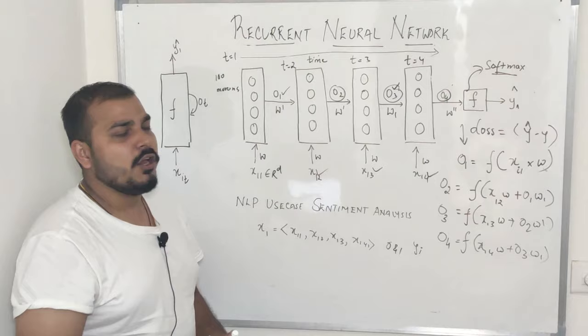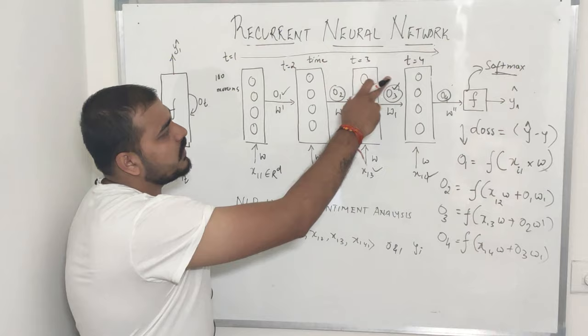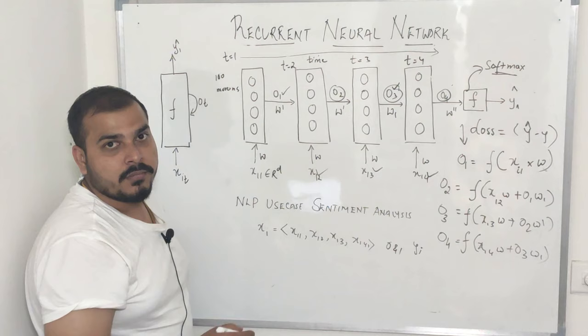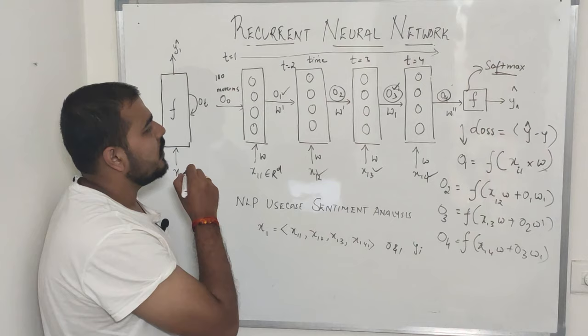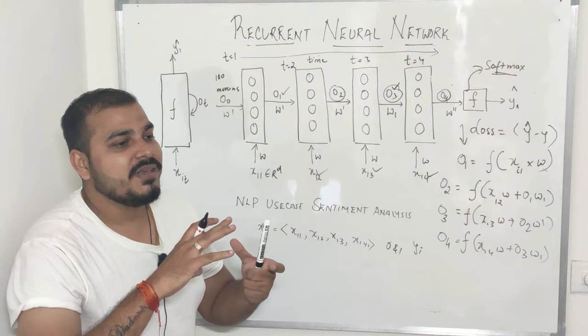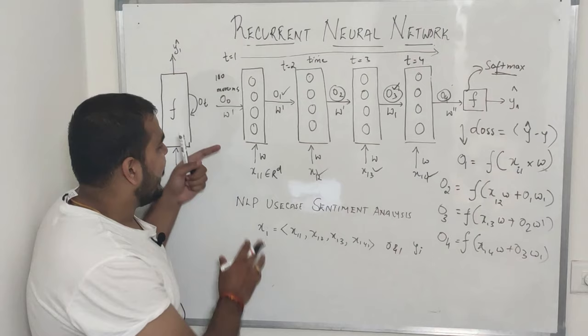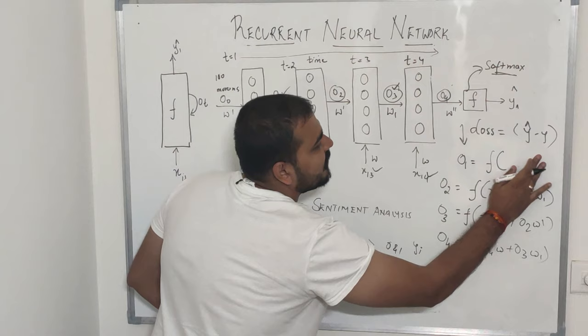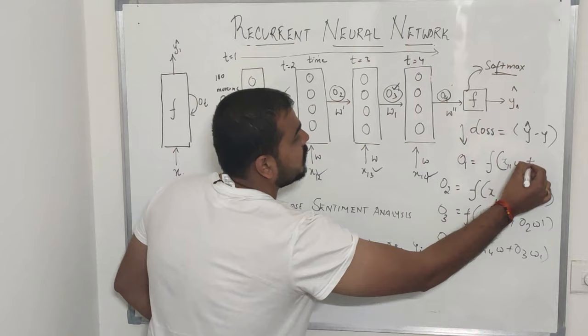I hope you understood this particular video. One more thing to note: for each and every hidden neuron, when time is equal to 2, 3, and 4, one output is going in. So in order to be consistent, in the input for T equal to 1 I'll also make an output zero — O0 — and the weights are initialized. This output zero is nothing but zero-padded values or randomly initialized values initially. Then I'll multiply this, and I'll add it in my first layer. So O1 can be written as f(X11 * W + O0 * W').